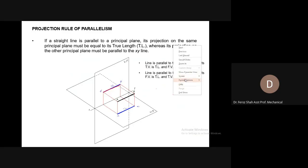In this case, the projection shows the true length because the line is parallel to HP. Line is parallel to HP — therefore its top view is true length and its front view is parallel to the XY line. You can see that the line is parallel to VP as well.